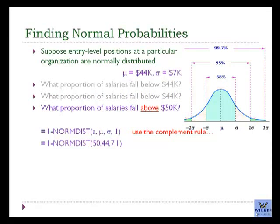What proportion of salaries fall above 50,000? Here we use the complement rule, since we're looking for a greater-than probability as opposed to a less-than probability. So we use 1 minus the NormDist function.